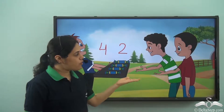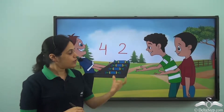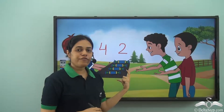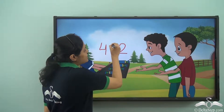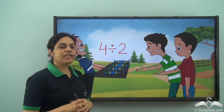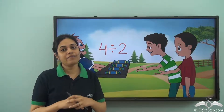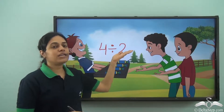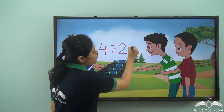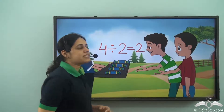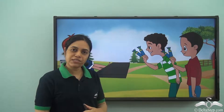So how many toffees will each get? When four toffees are divided between two friends, we get the answer by four divided by two. That is, each of them will get four divided by two toffees. Four divided by two is equal to two, so each of them will get two toffees.